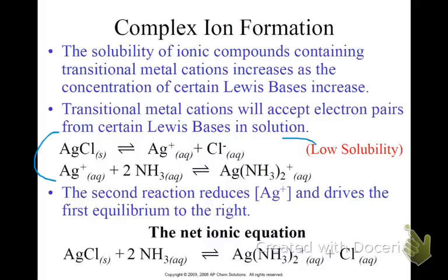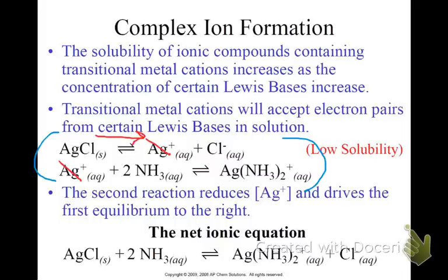We've got two systems occurring at the same time — not in separate reaction vessels. Silver, Ag+, is used up by the ammonia to create the complex ion. So if the silver gets used up, we are stressing the system, and the system is going to shift to relieve that stress. More of the AgCl is going to dissociate, shifting the first reaction to the right, creating more solubility of silver chloride. As it dissolves and creates more silver ions, those silvers get used up by ammonia to generate more complex ion, driven by that Lewis acid-base interaction.